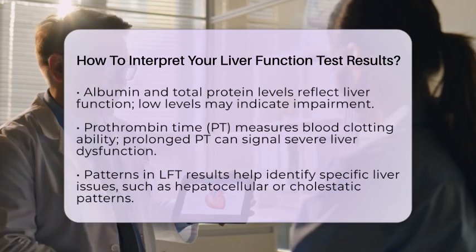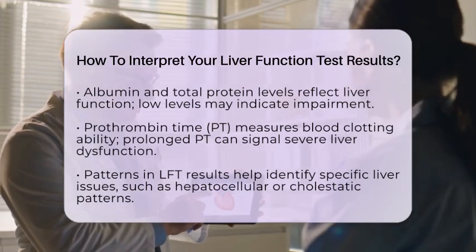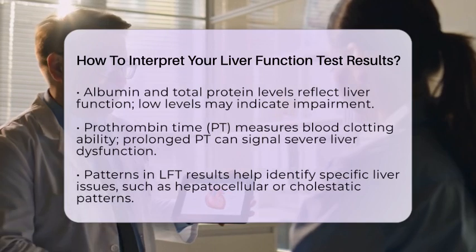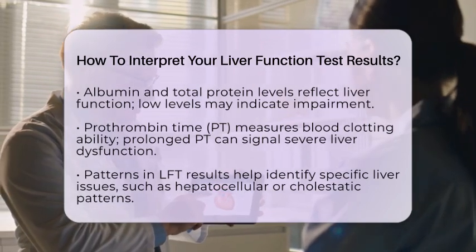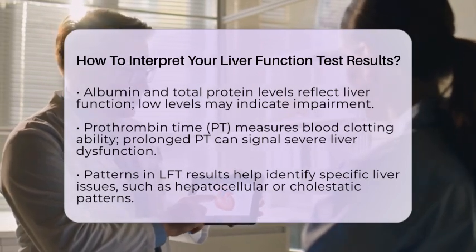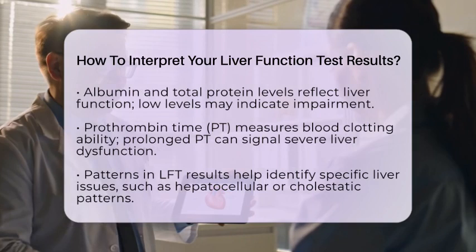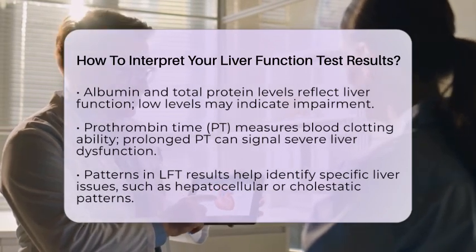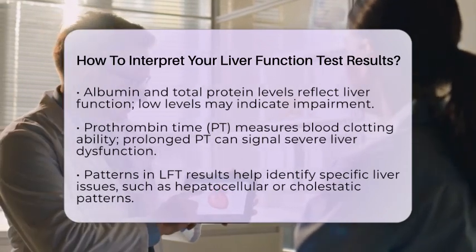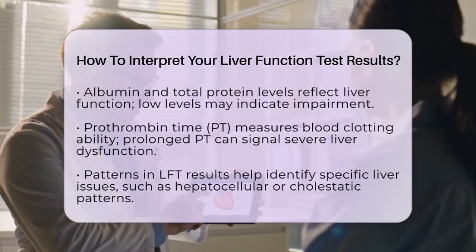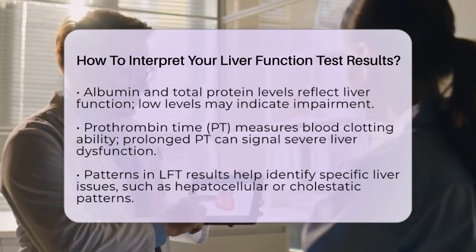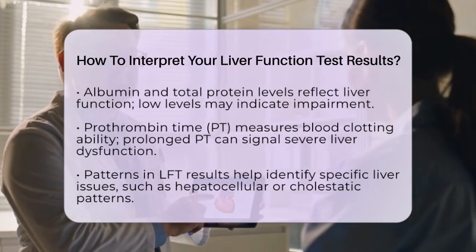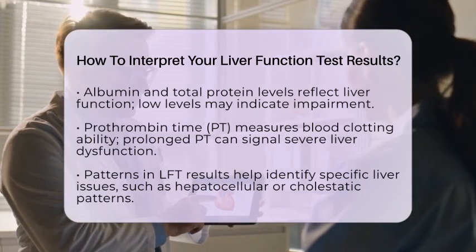The degree of elevation in these tests also matters. Mild abnormalities, which are less than twice the upper limit of normal, may just require monitoring. However, significant elevations — more than two to three times the upper limit — usually necessitate further investigation. This could include imaging studies like ultrasound or CT scans, additional blood tests, and possibly a referral to a liver specialist.